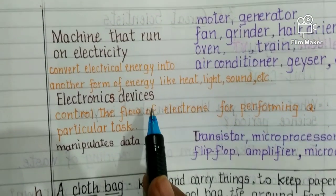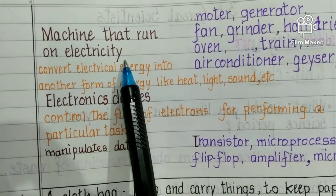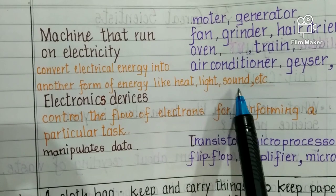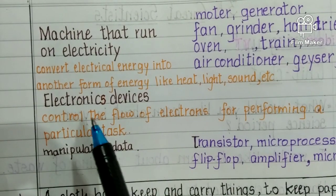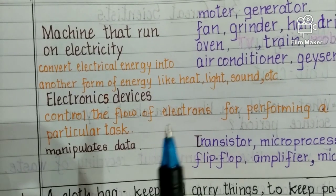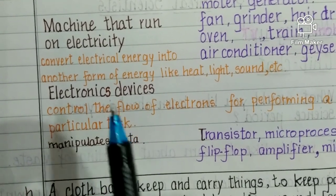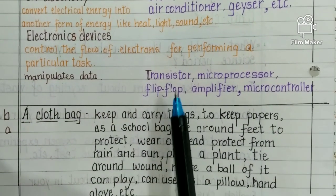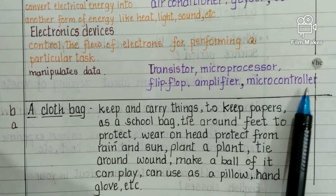The next category is electronic devices. You should know the difference between the two. Machines that run on electricity change electricity into heat, light, or sound. But electronic devices just control the flow of electrons and manipulate data for performing a particular task. Electronic devices include transistor, microprocessor, flip-flop amplifier, and microcontroller.